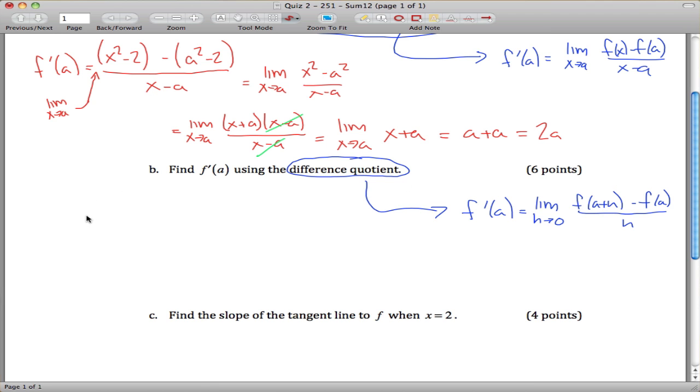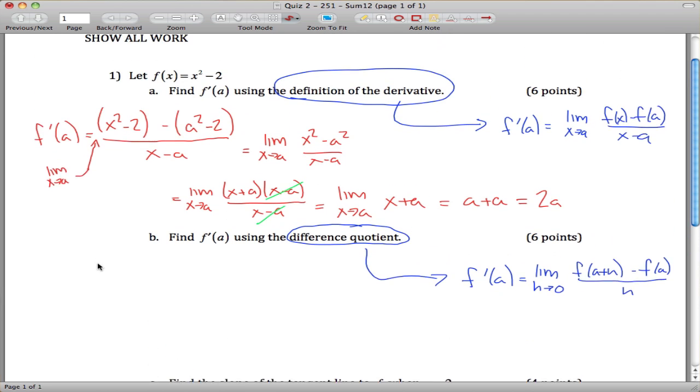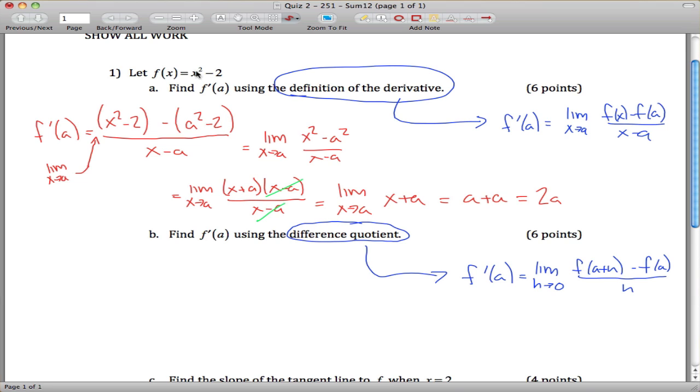So let's try to get this same answer using our same function here, x squared minus 2, but this formula. So f of a plus h. Here's f of x, change all the x's into a plus h, and we get f prime of a is equal to the limit as h approaches 0 of a plus h squared minus 2. And from that, we want to subtract f of a, a squared minus 2, and we want to divide that whole thing by h.